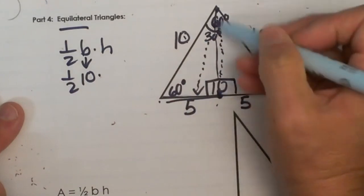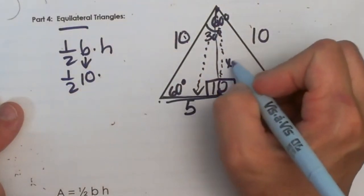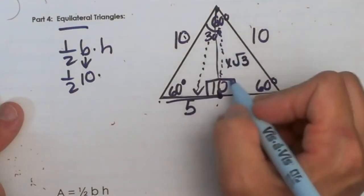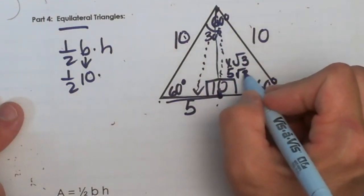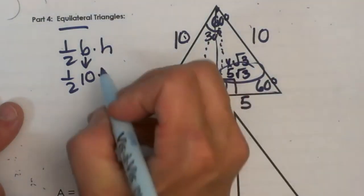And then to go from short leg to long leg, we multiply by a factor of square root 3. So that means our long leg is 5 square root 3, and the long leg here in this case is the altitude or the height.